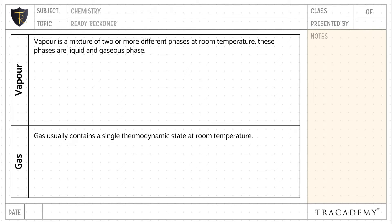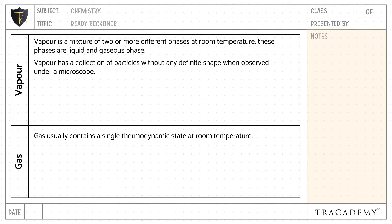Vapor has a collection of particles without any definite shape when observed under a microscope. Gas does not have a definite shape when it is observed under the microscope.